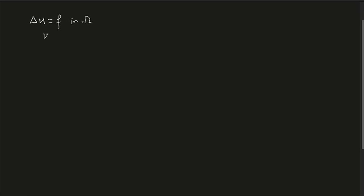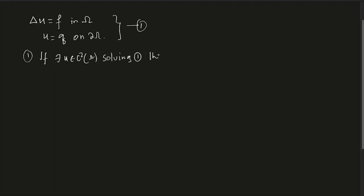In this lecture we are going to talk about some properties of the Laplace equation. As you have seen, we were interested in solving a problem like: Δu equals f in Ω, and u equals g on the boundary. We have seen that if there exists u in C²(Ω) solving this, then the solution is unique.